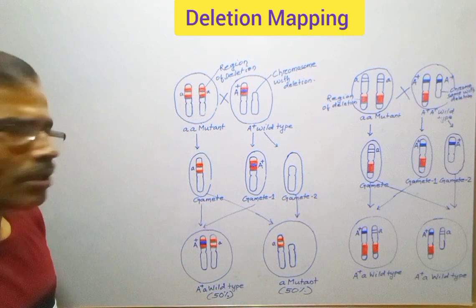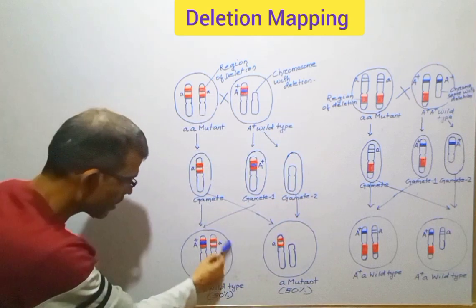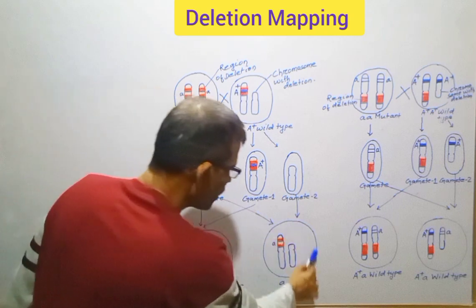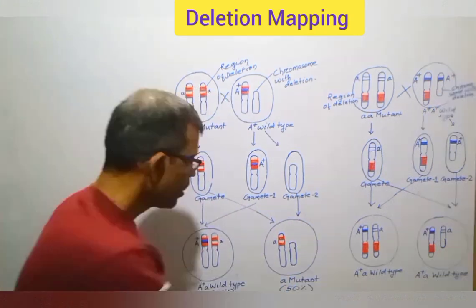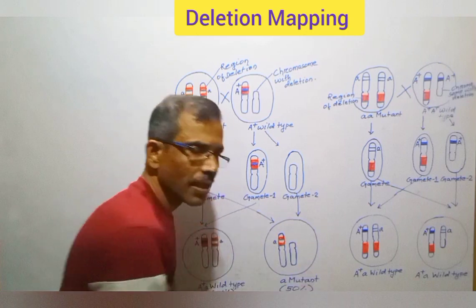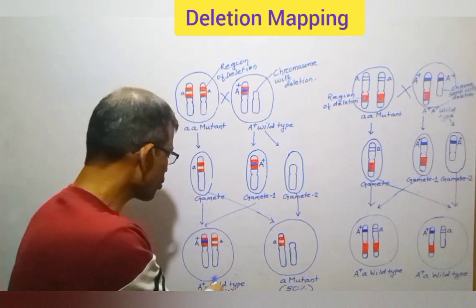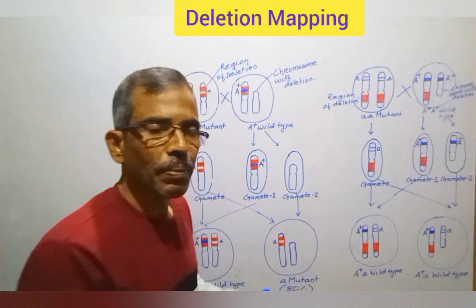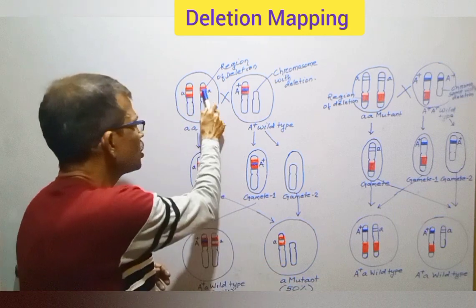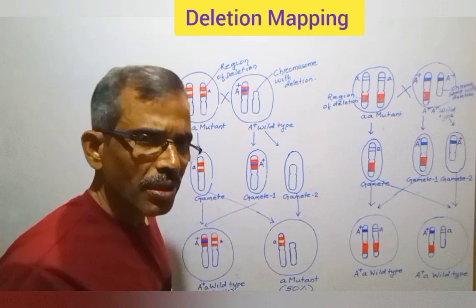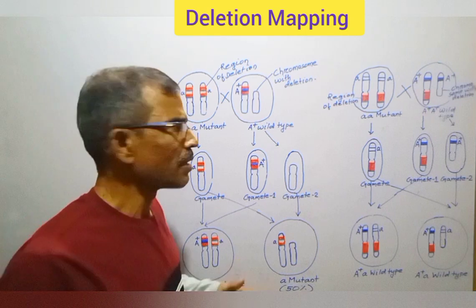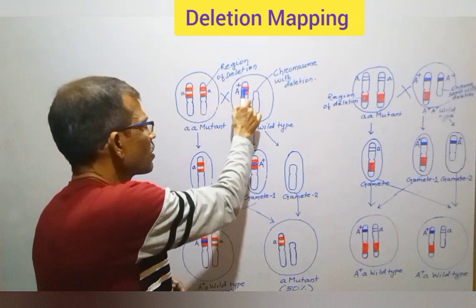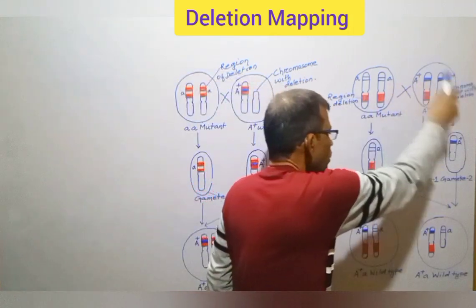After fertilization, in such a case, 50% of the progenies will be of wild-type and remaining 50% will be mutated. Such a result in which 50% of the progenies are of wild-type and remaining 50% are mutated indicates that the gene of interest is within the deletion region. So, this proves that the specific gene is located within this particular chromosomal band.